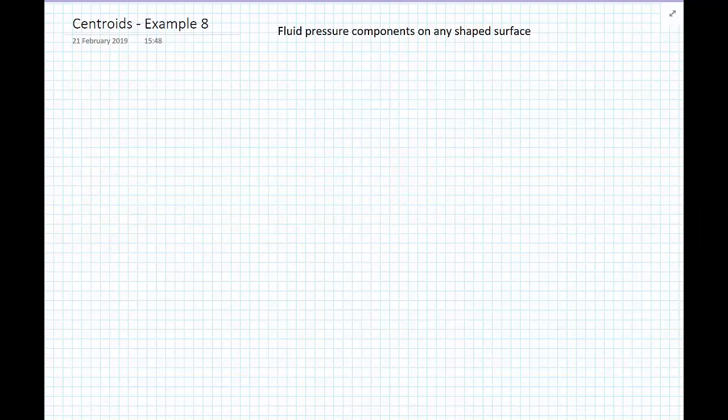In this final little bit of work on fluid pressure, we're going to have a look at a sneaky little way that you can work out the force components on any shaped surface. There's a couple of key words in that description - the fluid pressure components, i.e., we get the X component and the Y component, but I'm not worried about the resultant force or where the line of action is, although I could calculate it. And on any shaped surface we'll talk about as we go along.